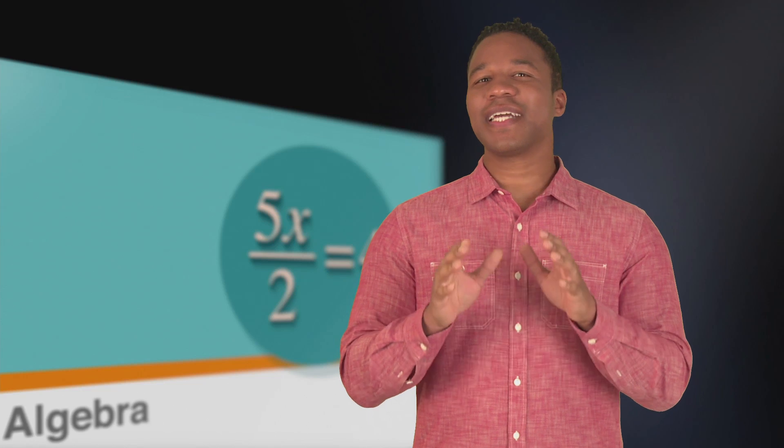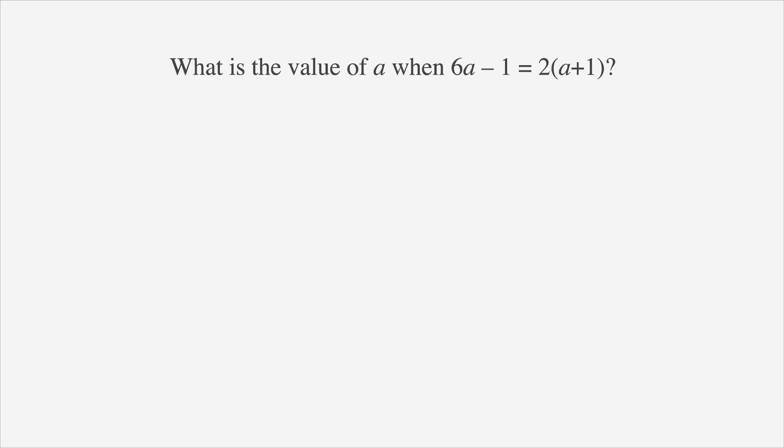Now let's take a look at how algebra shows up on the exam. What is the value of a when 6a minus 1 is equal to 2 times the quantity of a plus 1? a is 3 eighths, b is 3 fourths, c is 1 half, d is 0, and e is 5 over 2. We'll underline the facts, circle the keywords, and label the answer choices.